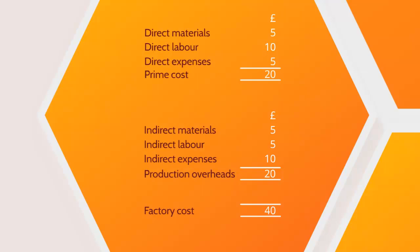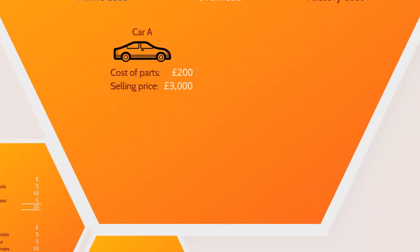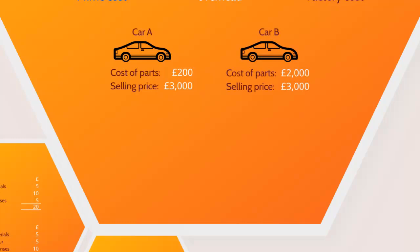But can it really be that simple — is it just a case of adding up a few expenses to accurately find out how much something costs? Let's consider two models of car produced in the factory. Car A is made from parts costing the company £200, with a selling price of £3,000. Car B is made up of parts costing £2,000, but also has a selling price of £3,000. Considering only this information, car A is far more profitable than car B — so the company might consider specialising in car A and even scrapping the production of car B altogether.